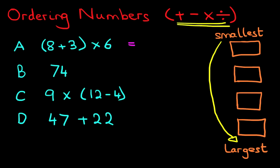We're working through A. Work out what is in the brackets first. 8 plus 3 is 11. And then we have to do the remaining bit. 11 times 6. What is 11 times 6? The answer is 66. And you know that from your 6 times table or even your 11 times table.